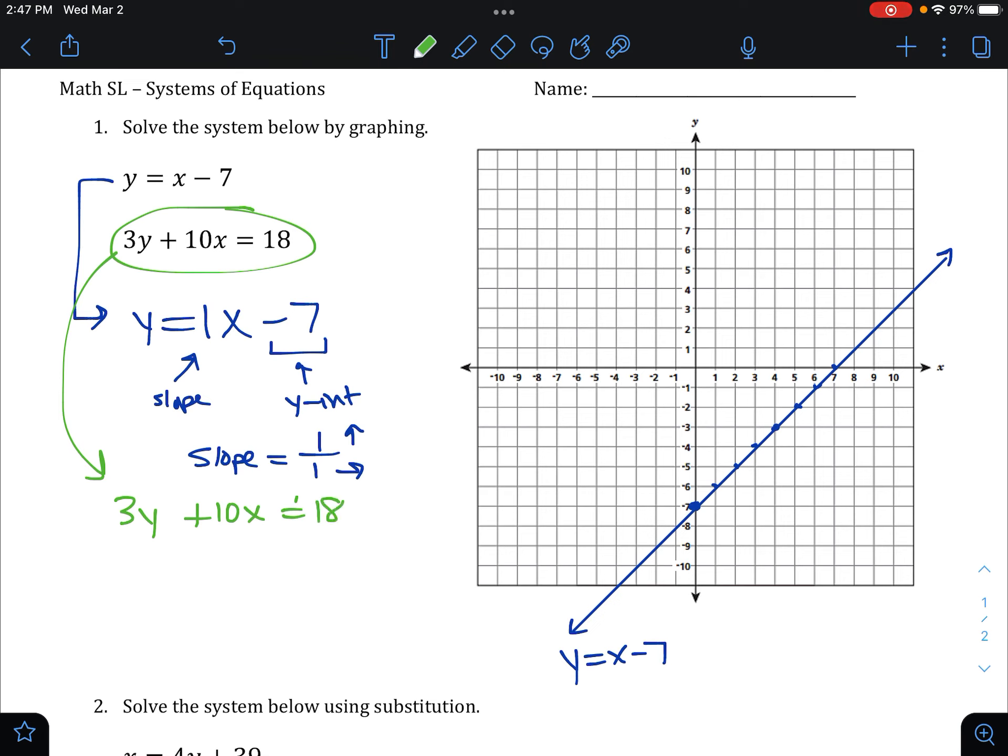So we're going to treat this like a two-step equation. We want to solve for y, so I'm going to circle that to remind myself not to touch that. We're going to move the x's by subtracting 10x from both sides. That will get rid of it on the left side. So 3y is going to equal 18 minus 10x. Just put those side by side. We do not combine those because they're not like terms. It's not 8x. It's not 8.